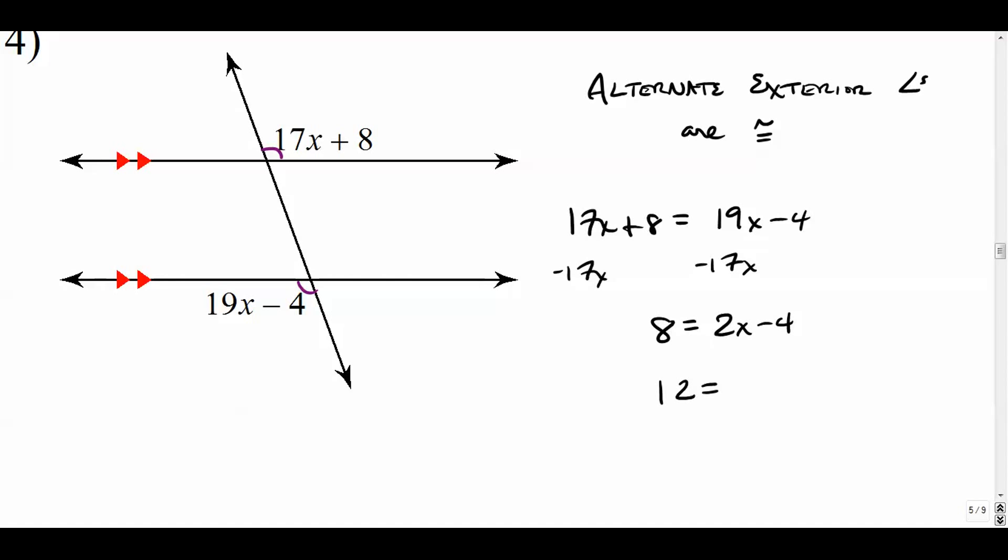And let's see, we get 8 is equal to 2x minus 4. We'll add 4. We get 12 is equal to 2x. X is equal to 6. And you're done. If you want to check that, you can plug that 6 right back in here and see if you get that these two angles are in fact the same.